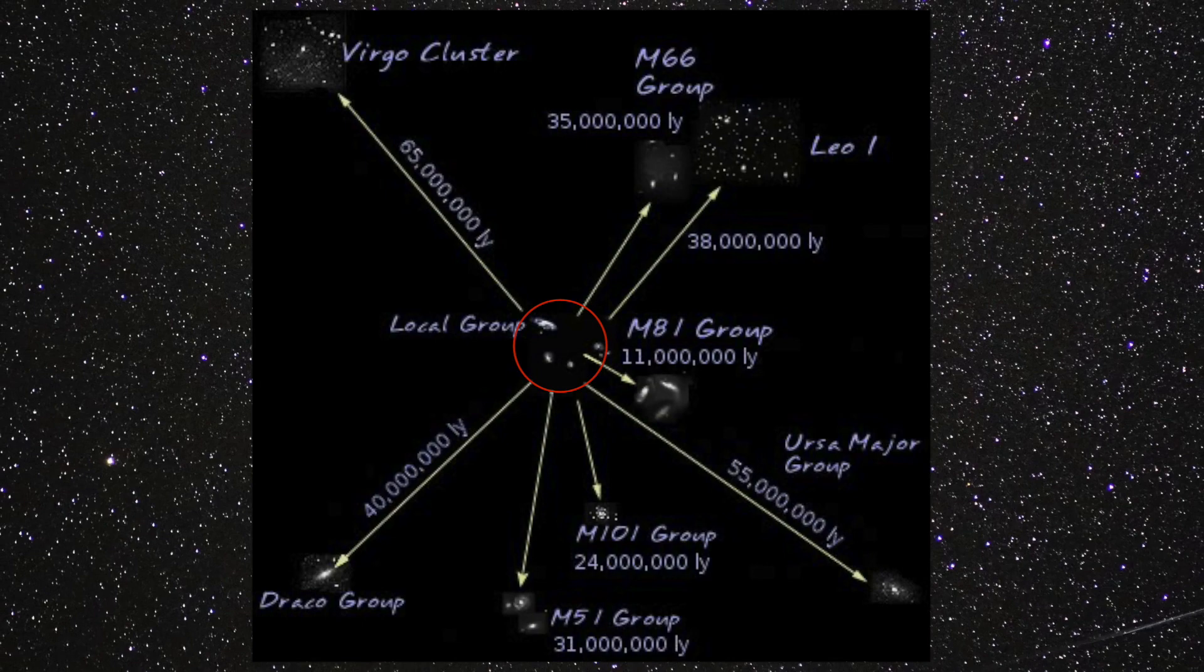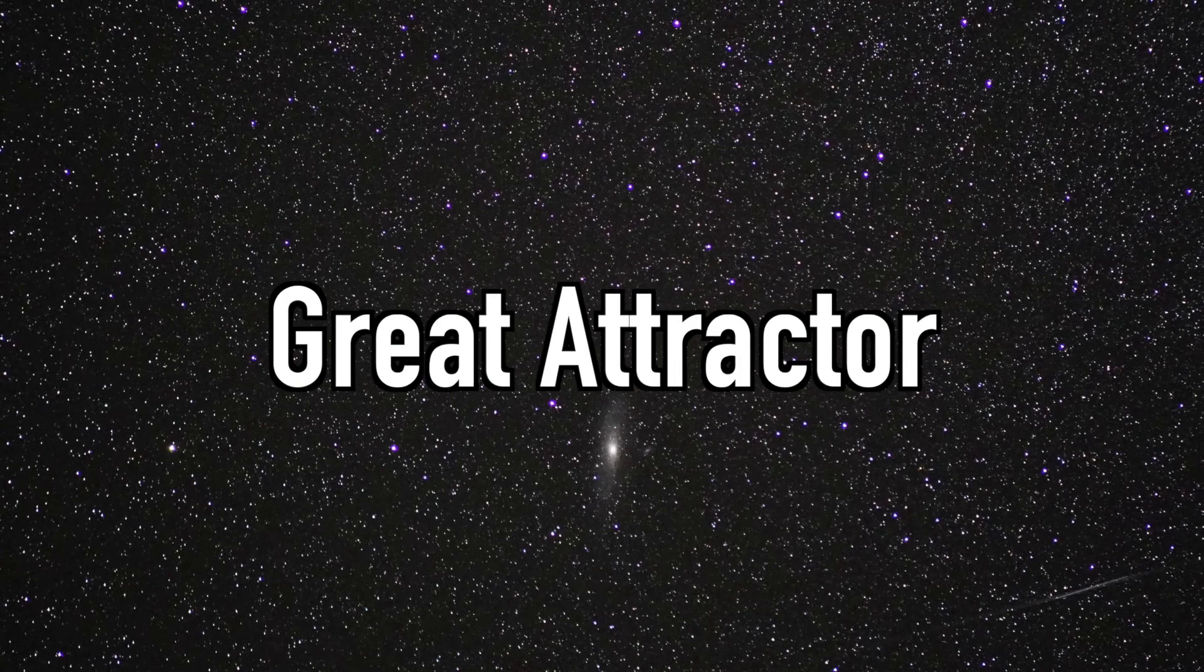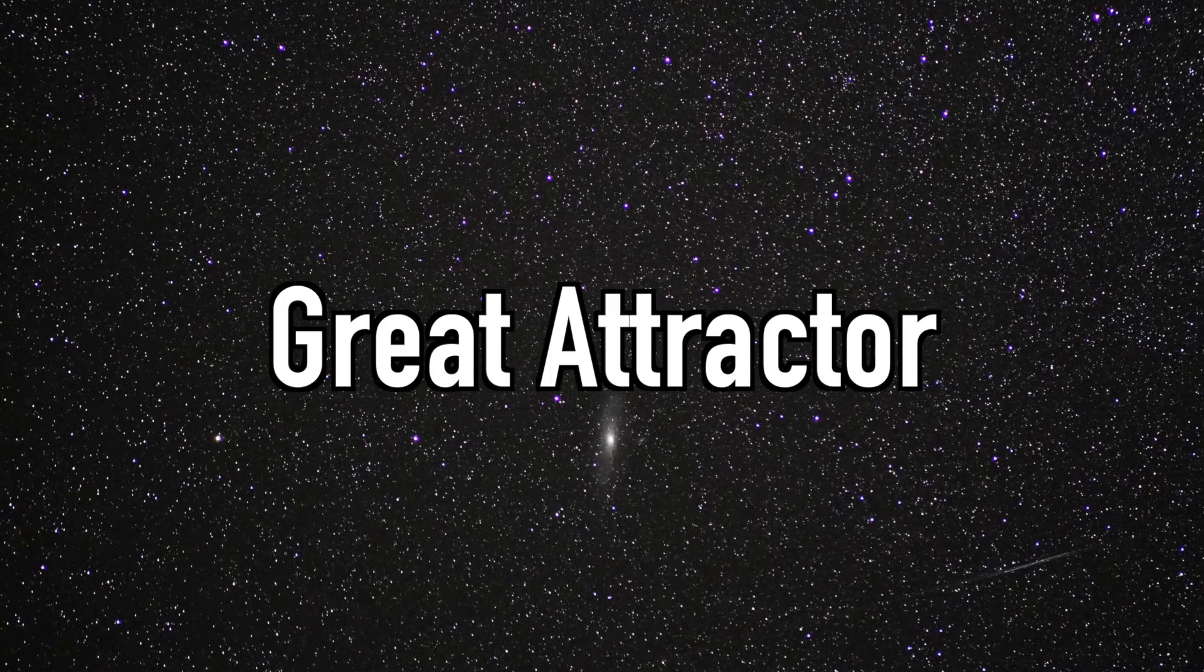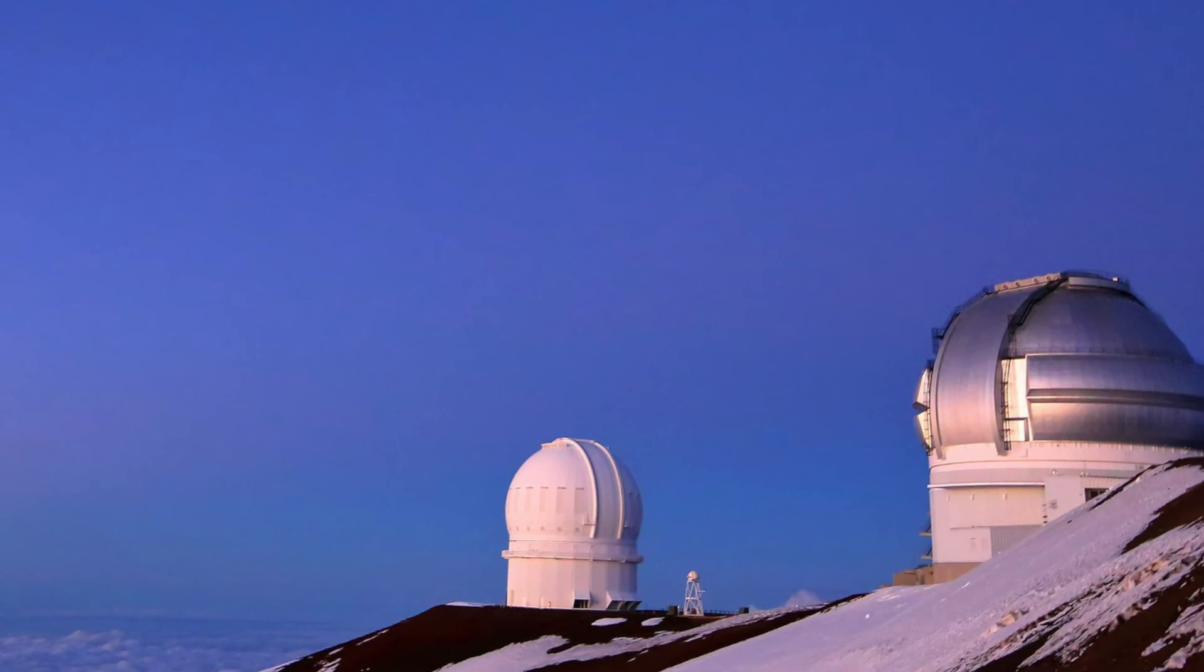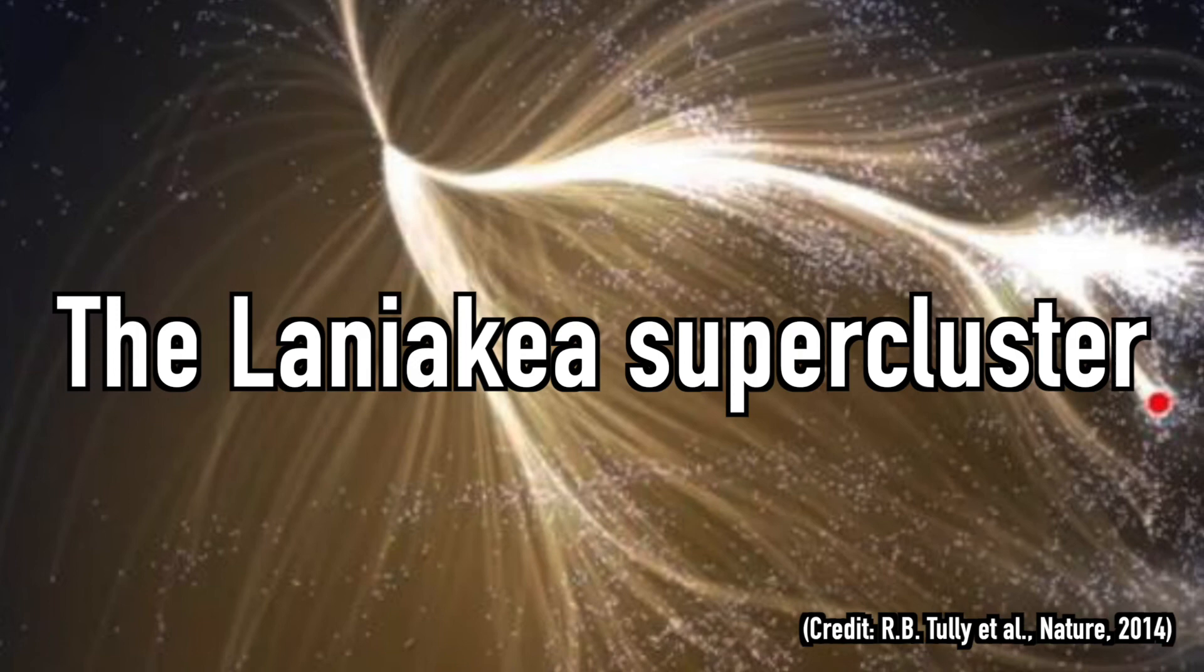This something is a mysterious gravitational source called the Great Attractor, which is said to be the most powerful force in the universe. This something is still unknown, but in September 2014, astronomer Brent Tully and his team at the University of Hawaii announced that it is attracted to the Laniakea supercluster, which is even larger than the Virgo supercluster. This Laniakea supercluster is said to be about 500 million light years in diameter.